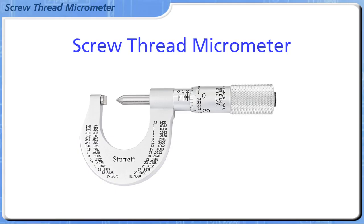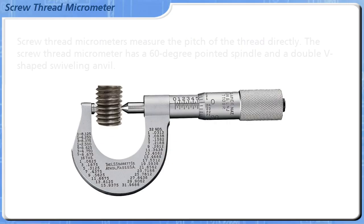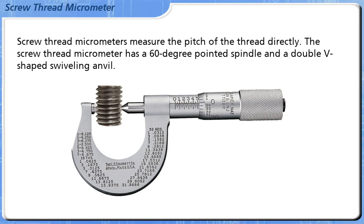Welcome to this module on the Screw Thread Micrometer. Screw Thread Micrometers measure the pitch of the thread directly. The Screw Thread Micrometer has a 60-degree pointed spindle and a double V-shaped swiveling anvil.